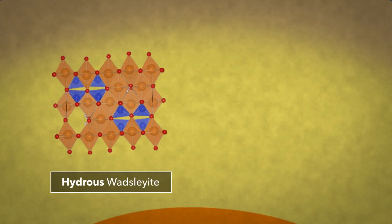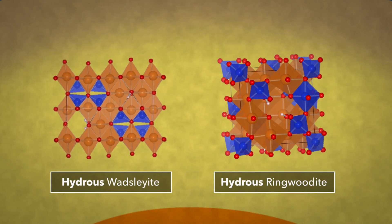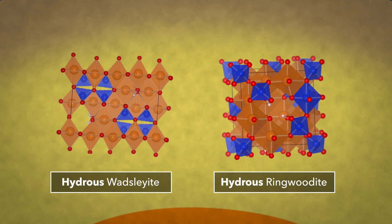This confirms that wadsleyite and ringwoodite can indeed accommodate up to about 3 weight percent H2O, suggesting that mantle transition region is a huge water reservoir, containing five times as much water as the oceans.